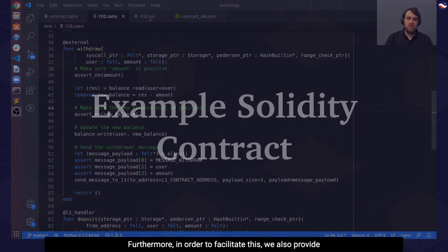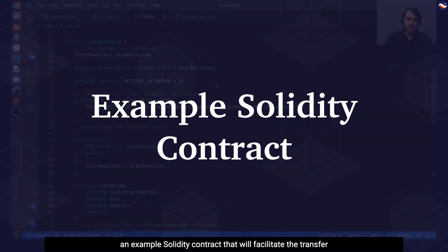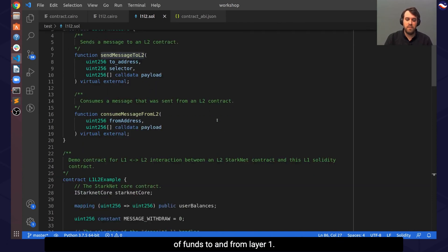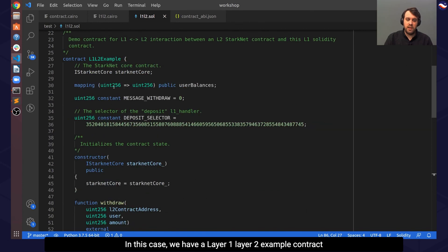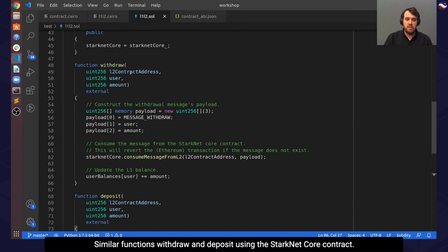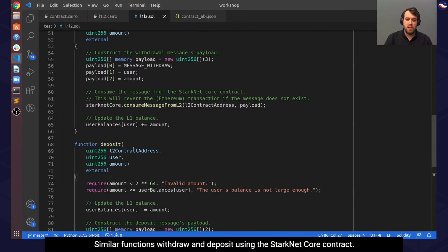Furthermore, in order to facilitate this, we also provide an example solidity contract that will facilitate the transfer of funds to and from Layer 1. In this case, we have a Layer 1, Layer 2 example contract that implements, on Layer 1, similar functions, withdraw and deposit, using the StarkNet Core contract.